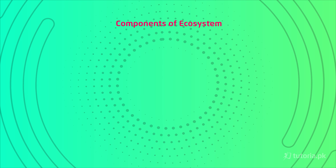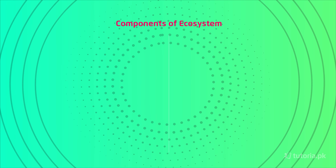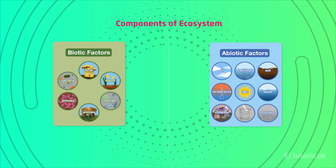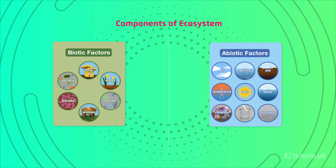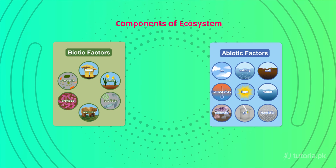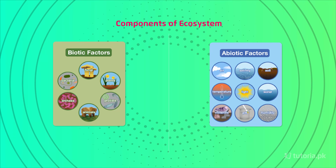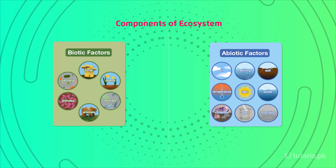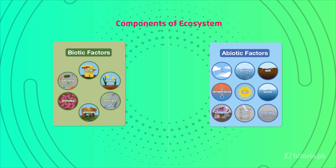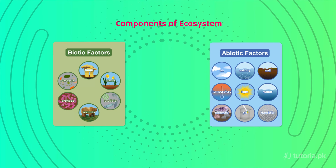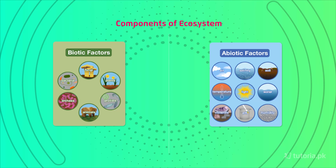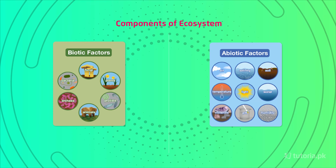Now there are two major components of our ecosystem: biotic components and abiotic components. Biotic components are the living things — humans, animals, plants, bacteria, fungi — these are all biotic factors and biotic components.